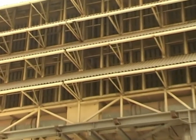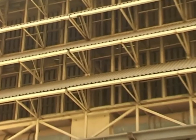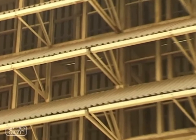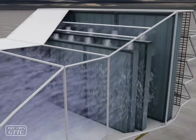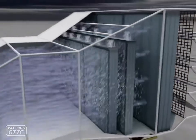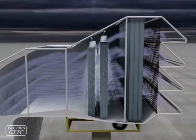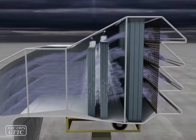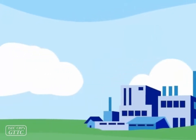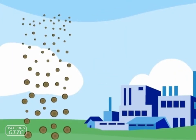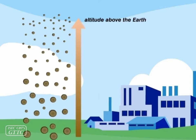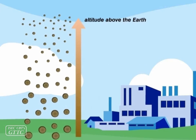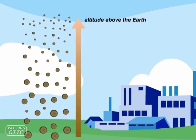Air intake: the air needed for the gas turbine must be completely clean and free of suspended particles. The diameter of these particles reduces with the increase of altitude, and the presence of these particles in the inlet air causes many problems when passing through different sections of the gas turbine.